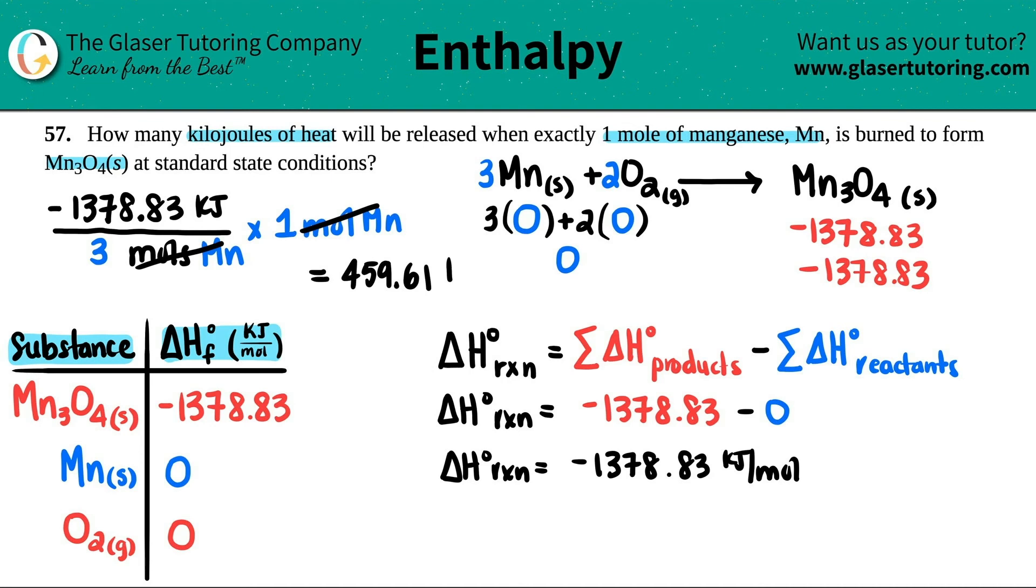Now, there's still a negative here because when I did the math there's a negative. But just remember that the negative means that the heat was just released. How many kilojoules of heat was released? There's no such thing as a negative amount of heat or negative amount of energy - it just means that it's being released. So when you're answering this question, you don't put the negative. You would just say that there is 459.61 kilojoules released.